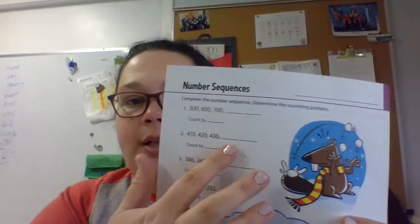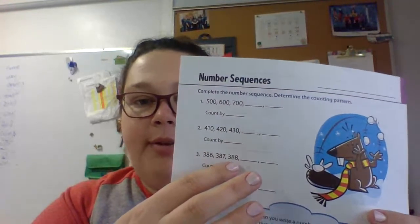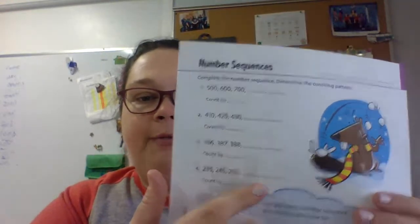So do you see how you went from hundreds, now you're going to tens. Now look, 386, 387, 388, so you're going by ones. Then this one, you're going to figure those out.